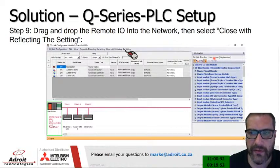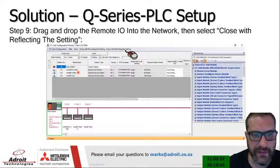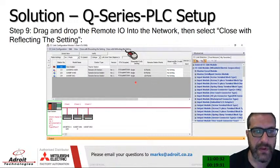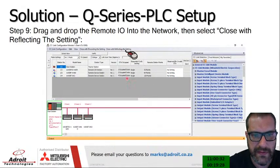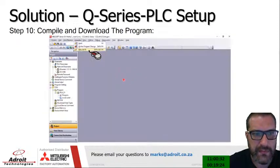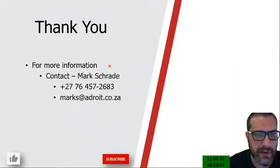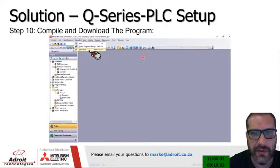The key setting is 'CC Link Configuration Setting.' Select it and you'll go to a configuration page. On the right side there is a 'Find Module' option where you can search for and find the specific device you want to communicate with in the field. Once found, simply drag and drop it into the configuration. Every time you add a device, drag and drop it in. When done, click 'Close with Reflecting the Setting' to save. Then compile the program via Compile > Rebuild All to check for syntax errors, and once clear, download the program to the PLC.